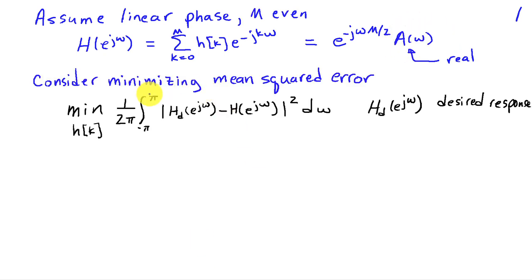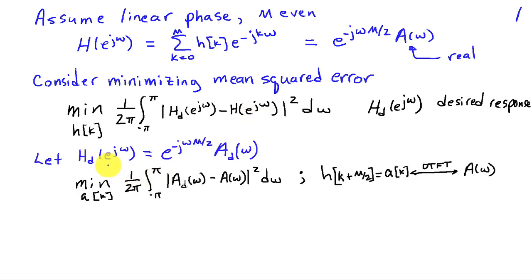What we're going to start off by doing is minimizing the mean squared error between our actual filter that we're trying to design—involving the coefficients h[k]—and some desired filter. We'll integrate from minus pi to pi the magnitude squared of the error between our desired filter and our designed filter. We assume that our desired filter is also a linear phase filter with the same group delay of m over 2, and consequently we can pull these phase factors out and write it entirely as the difference between A_d and A of omega magnitude squared, integrated over minus pi to pi.